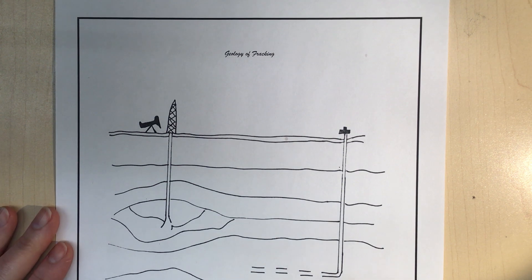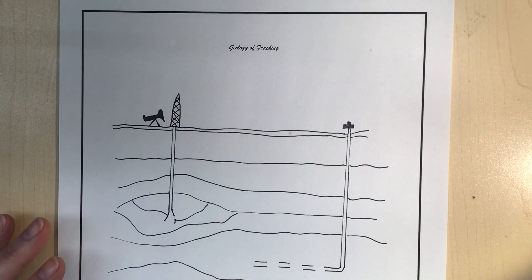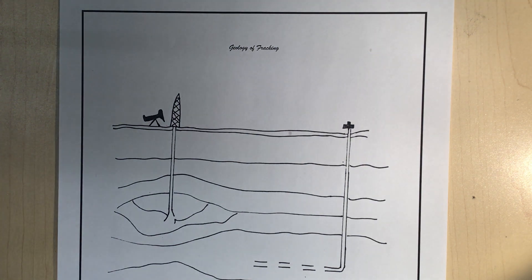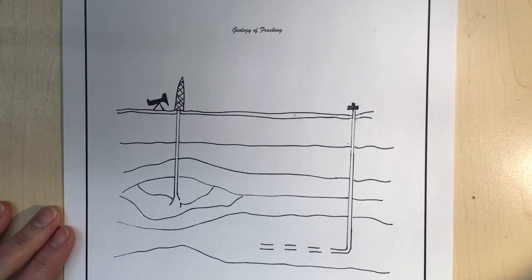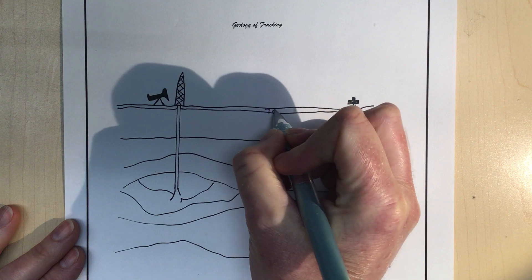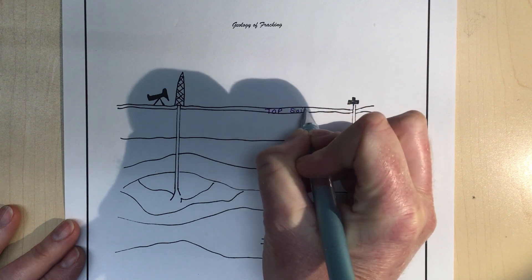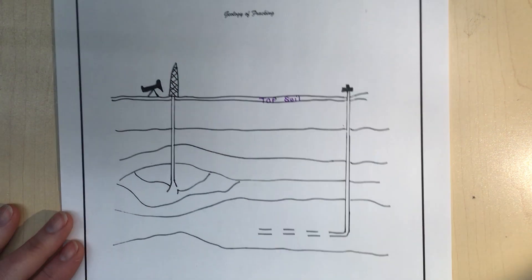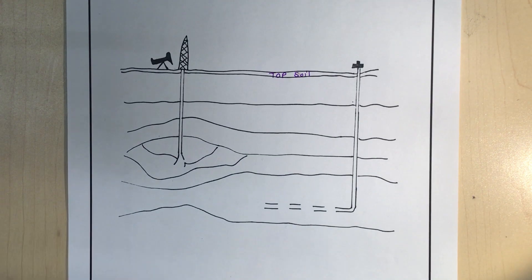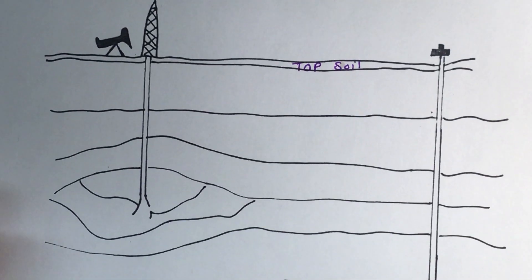So we have some layers under the earth and they're not to scale, just so you know. The topsoil would be here and it is a thin layer in most places compared to the next layers.